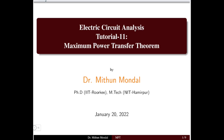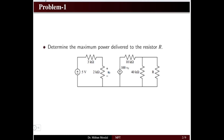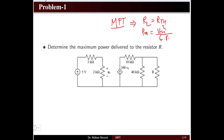Tutorial 11 on electric circuit analysis covers the Maximum Power Transfer Theorem (MPT). We know that maximum power can be transferred from the source to the load if the load resistance equals the Thevenin resistance of the network. The maximum power transferred has a value of the Thevenin voltage squared divided by four times the load resistance RL.